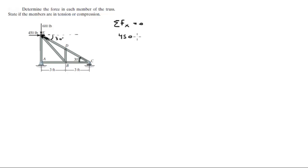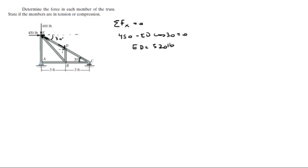450 going to the right at E minus Ed cosine of 30 is equal to 0, which would make Ed equal to 520 pounds. And as you can see, that member is in compression.